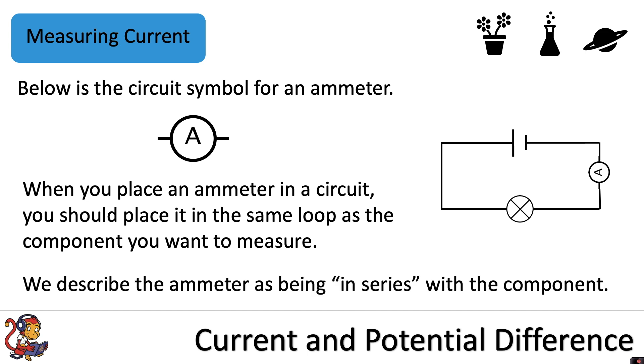We describe the ammeter as being in series with the component. So in this circuit there is just one loop of wire and if we wanted to measure the current flowing through this lamp, we would just need to place the ammeter in that same loop of wire.